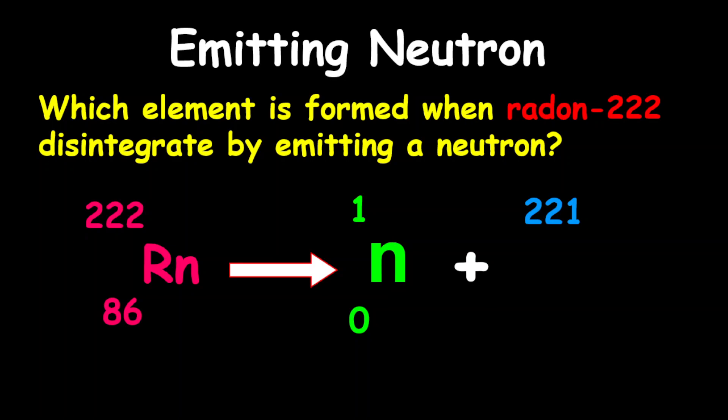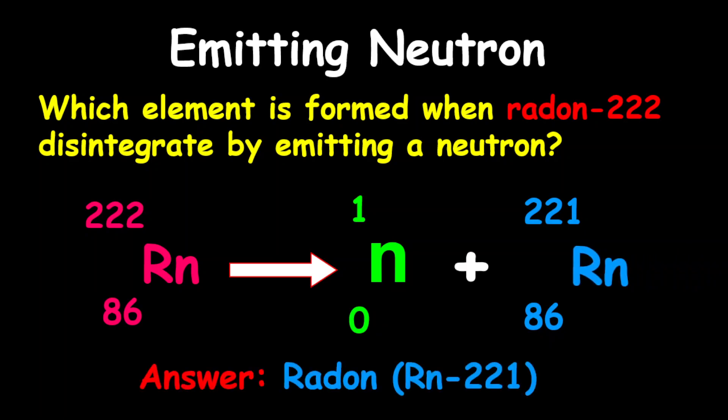Taking away zero from the proton number gives us the same proton number. Therefore, the new element is still radon. However, the mass number is 221. So therefore, the answer is radon-221.